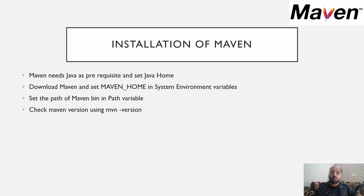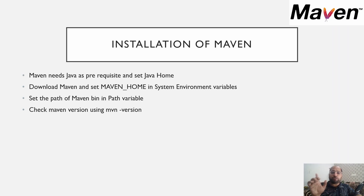Hello everyone, welcome back to my channel Prince Automation Destination. In our previous lecture we introduced Maven and discussed the various components of Maven. If you are not aware of what Maven is and its components, please check out my previous video — I'll be sharing the link in the i-icon. In today's lecture we'll be covering how to install Maven on a Windows machine.